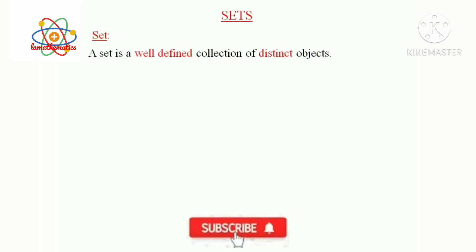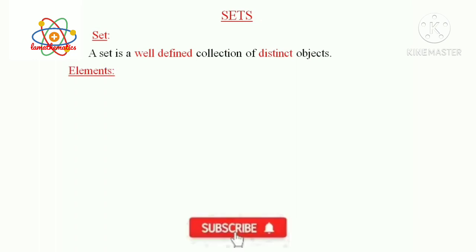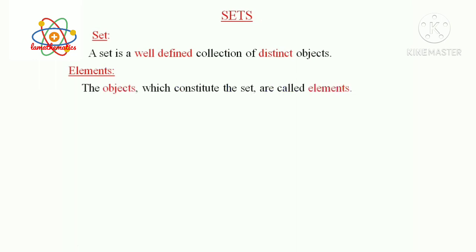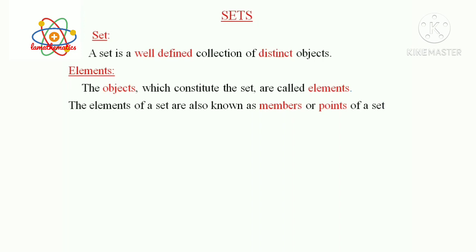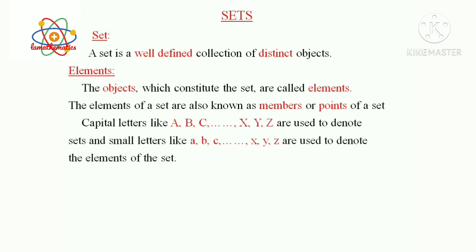Let us start with our first chapter — Chapter 1: Sets. A set is a well-defined collection of distinct objects. In a set, the collection must be well-defined and the objects are not repeated. The objects which constitute the set are called elements. The elements of a set are known as members or points of a set.